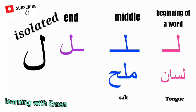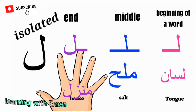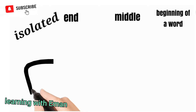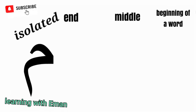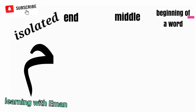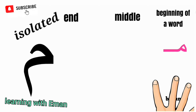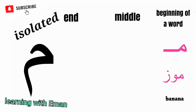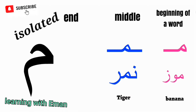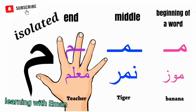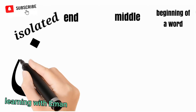The next letter is Meem. Meem is equivalent to the English letter M. At the beginning of a word, like 'Mauz', meaning banana. At the middle of a word, like 'Namir', meaning tiger. At the end of a word, like 'Mu'alim', meaning teacher.